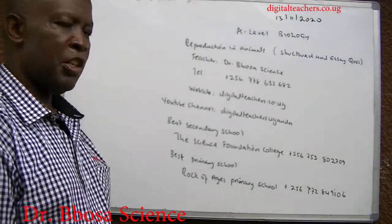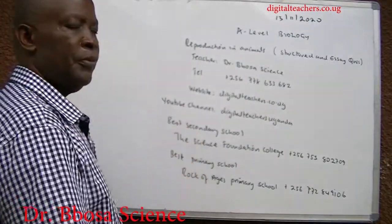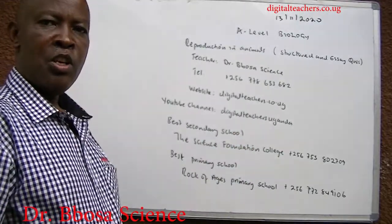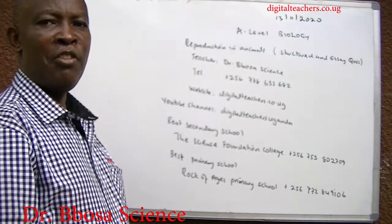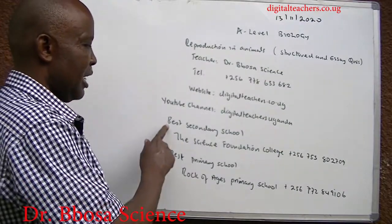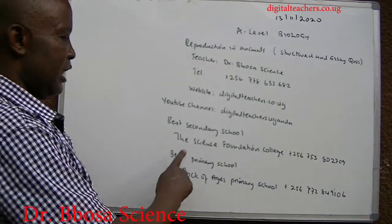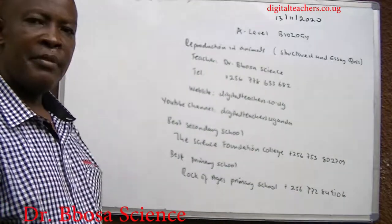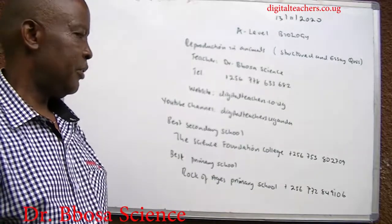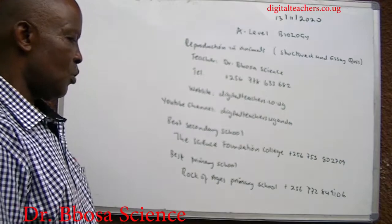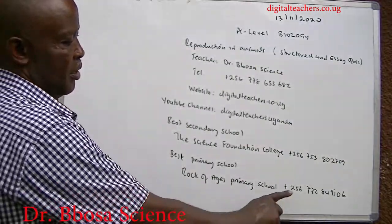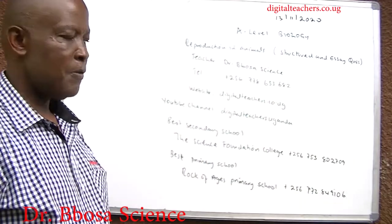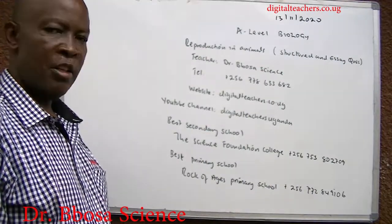YouTube channel: Digital Teachers Uganda. Go to the YouTube website, type in Digital Teachers Science Uganda. You will be given categories of videos in Physics, Chemistry, Biology and Math. The best secondary school is the Science Foundation College, plus 256-753-827-09. The best primary school is Rock of Ages Primary School, plus 256-772-849106.